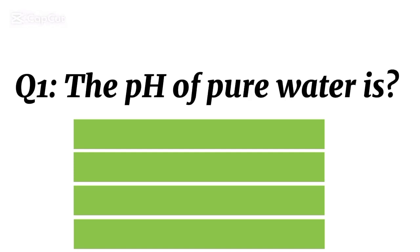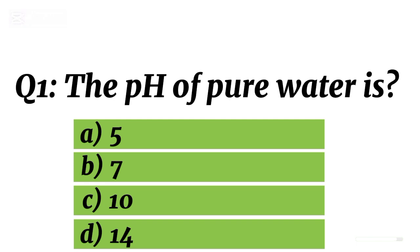Question 1. The pH of pure water is? Correct option B is 7.